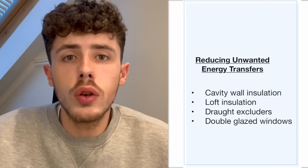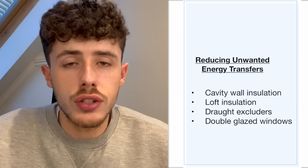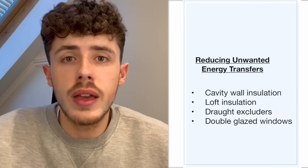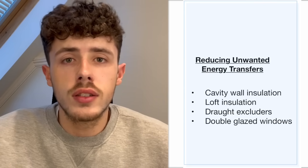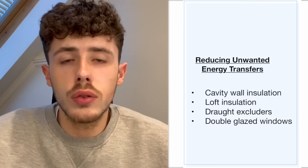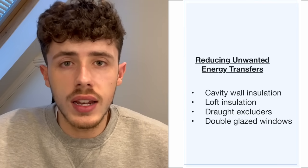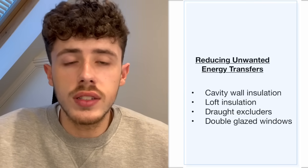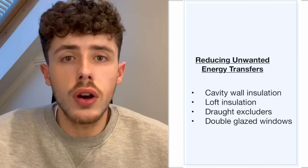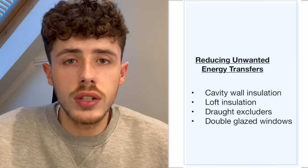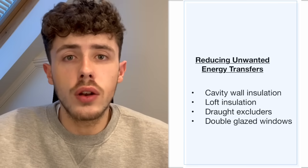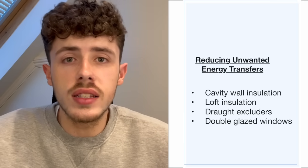Moving on to energy in the home. There are multiple ways to reduce unwanted energy transfers that you may be tested on. Some of these include wall insulation, roof insulation, draft excluders underneath doors, and also double glazing windows.